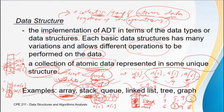As you can see, a data structure is defined as a group of atomic data values together with unique operations for those values, where the data elements are stored in a unique structure that dictates how operations are to be performed.